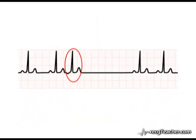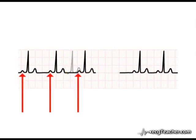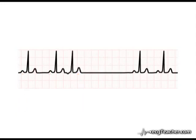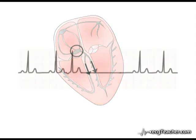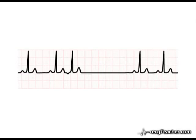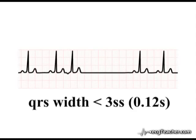On the ECG, the premature atrial contraction occurs earlier than the next predicted sinus beat. Also, and very importantly, as the ectopic discharge originates in the atrium, it must be transmitted into the ventricles by the AV node, and consequently into the ventricular conducting system. Therefore, as the wave is transmitted at normal speed around the chambers by the conducting system, the QRS complex associated with an atrial ectopic is of normal duration — that is, less than three small squares in width.